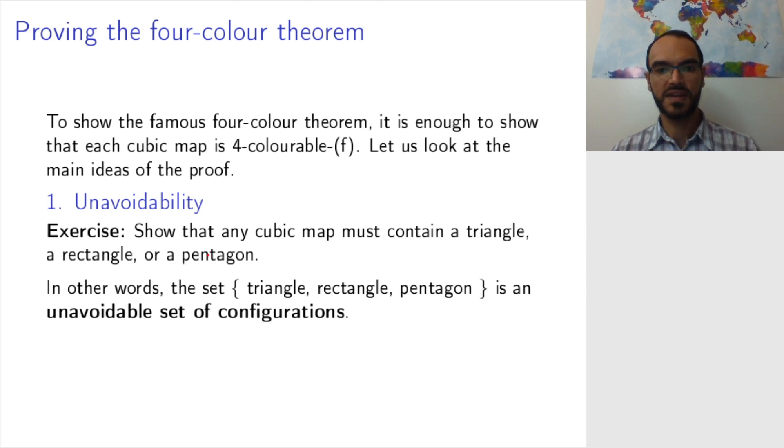Another way to say this is that the set of triangles, rectangles, and pentagons is an unavoidable set of configurations, meaning that it is impossible to draw a cubic map without somewhere having one configuration from this set. So triangle, rectangle, and pentagon are each called configurations.